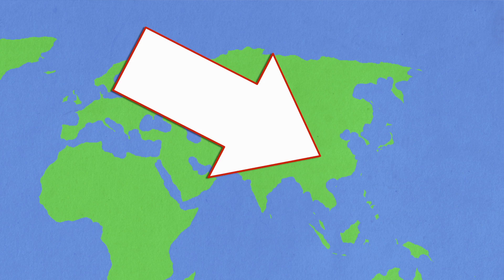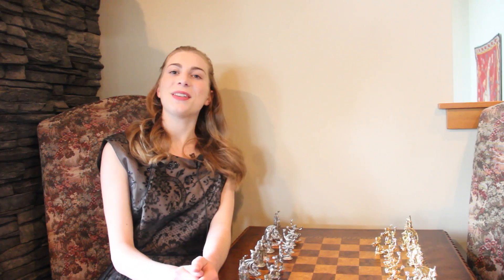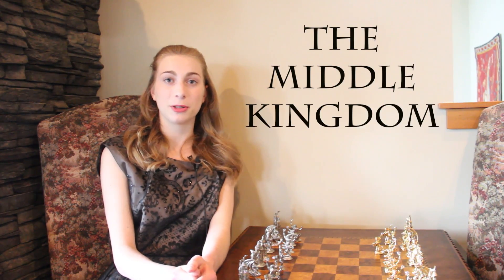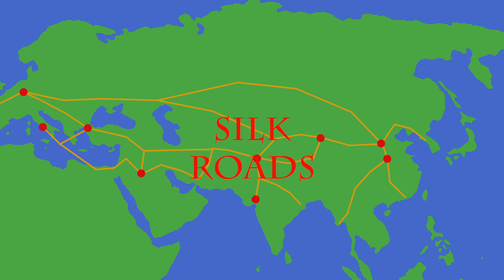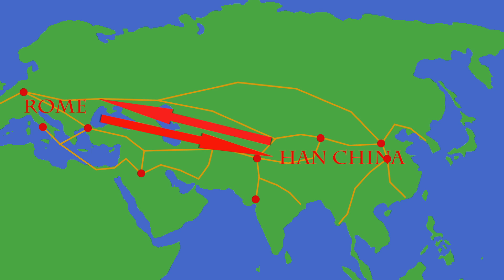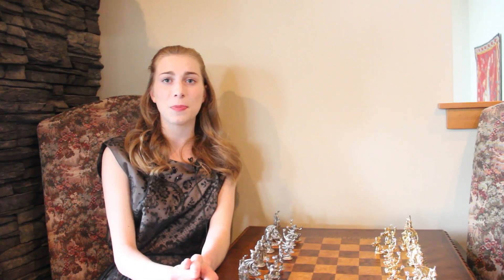Alright, China. Throughout this time, China's contacts with the rest of the world grew, although it still called itself the Middle Kingdom. The good old Silk Roads facilitated trade, particularly between Han China and Rome. Trade was a big factor, as different civilizations began to notice that they weren't the only ones around.